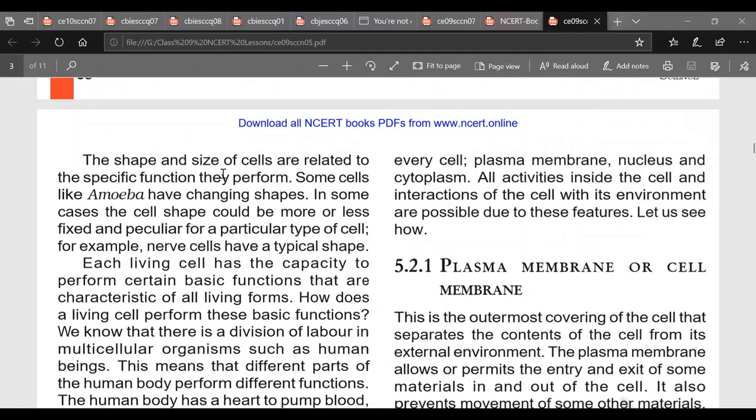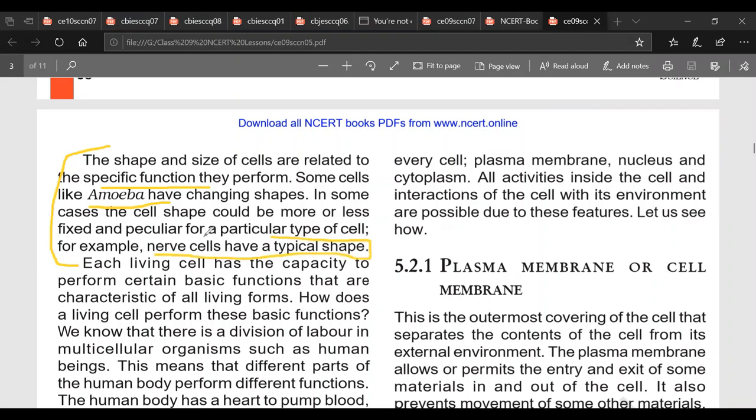Now here in this paragraph it comes, what are the factors on which shape and size of cells depend? Shape and size of cells are related to specific function they perform. Some cells can change their shape. So name the cells that can change their shape is amoeba. In some cases cell shape could be more or less fixed and peculiar for a particular type of cell. For example, nerve cells have a typical shape and this shape helps in transmission of nerve impulses. Each living cell has capacity to perform certain basic functions which are characteristics of living form. How does a living cell perform these basic functions?